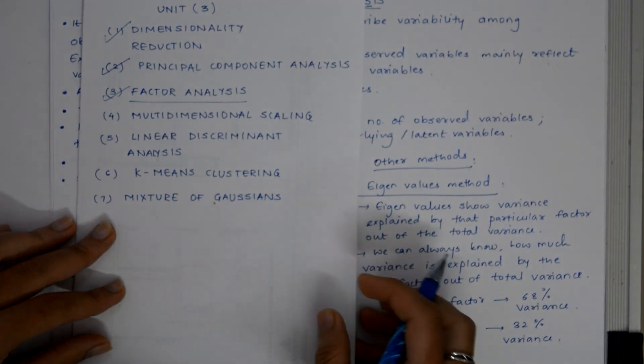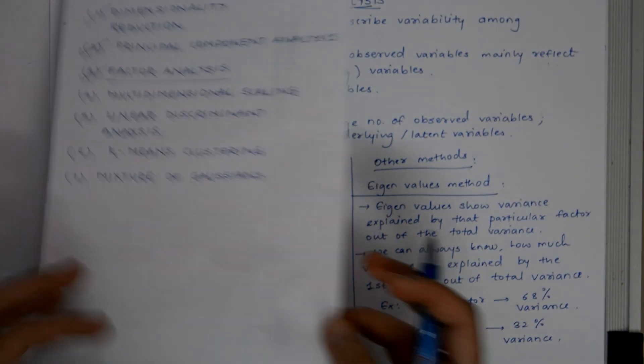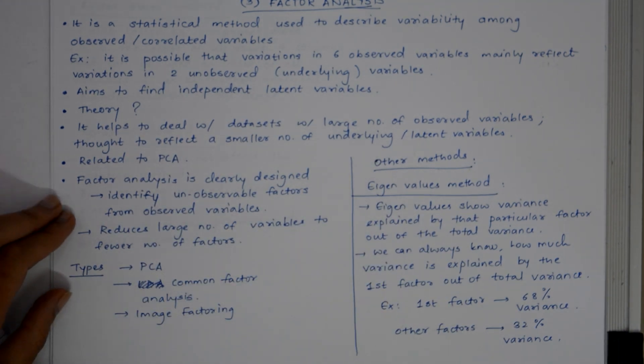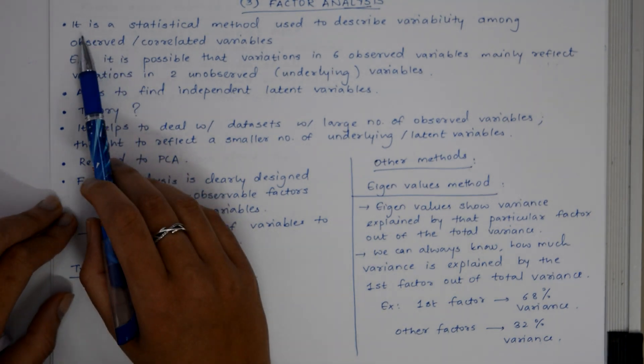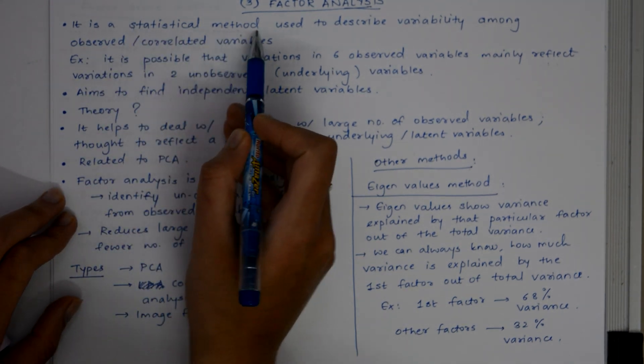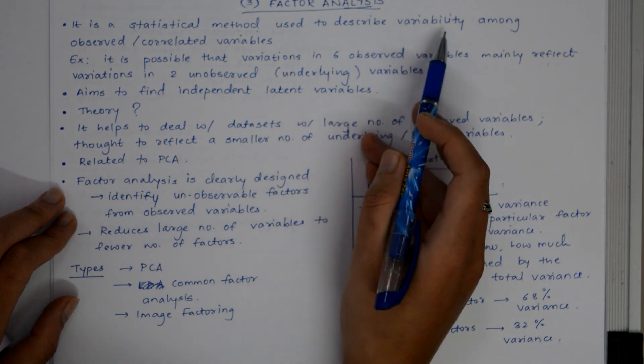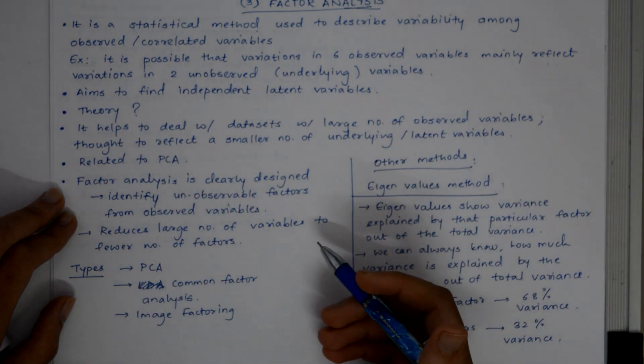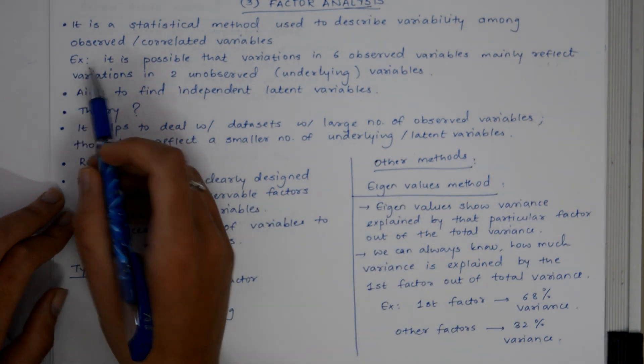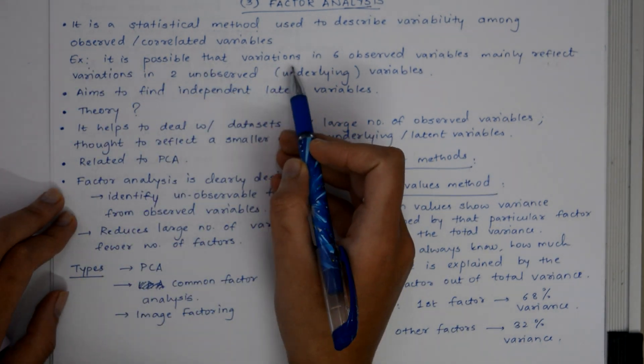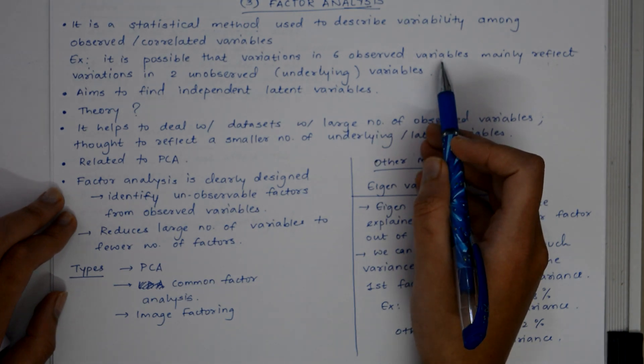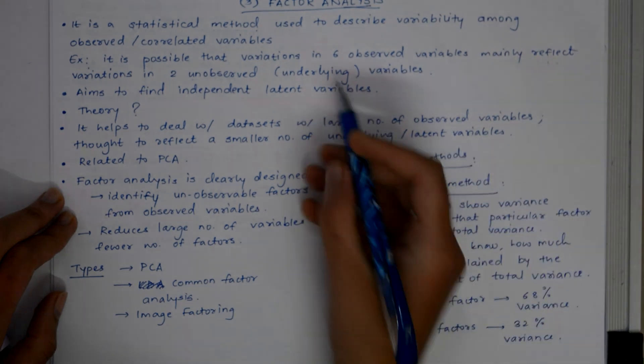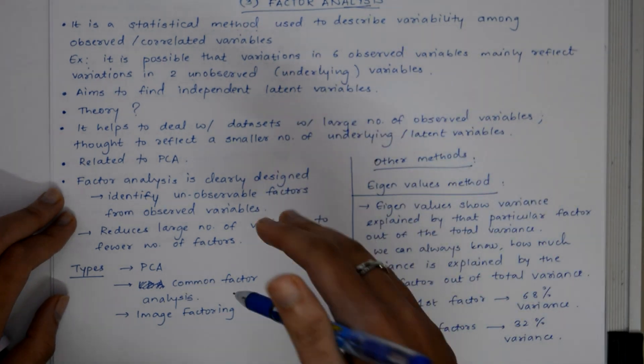Factor analysis is the third part of Unit 3. Factor analysis is a statistical method used to describe variability among observed or correlated variables. We can explain it with an example: it is possible that variations in six observed variables mainly reflect variations in two unobserved underlying variables.